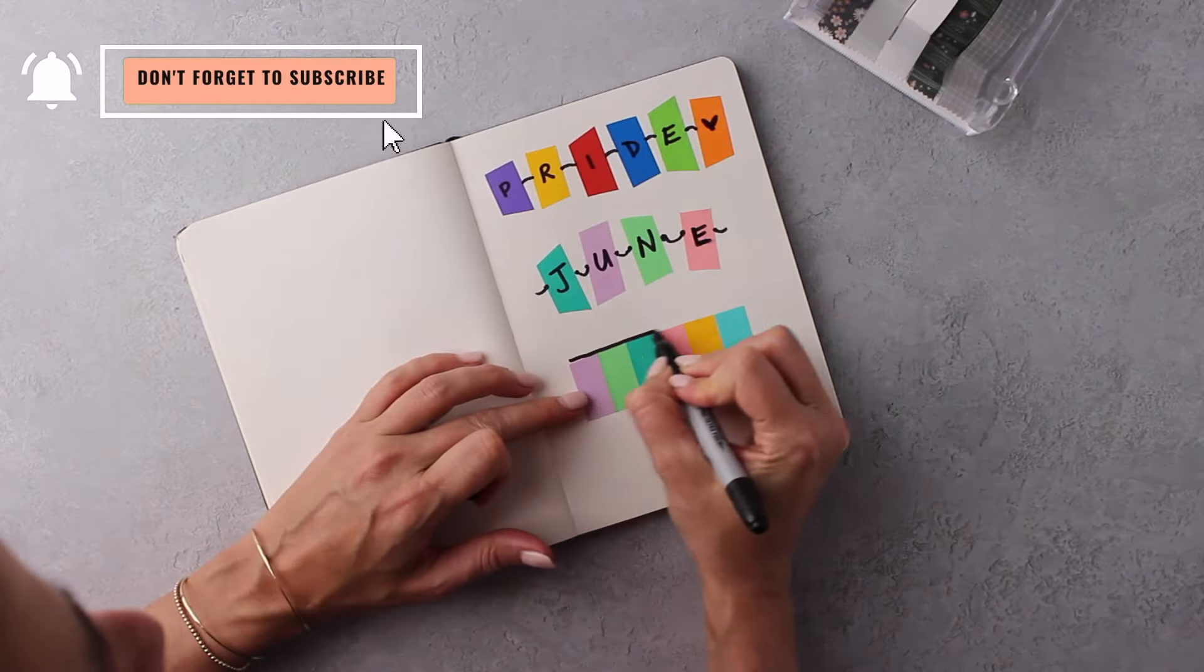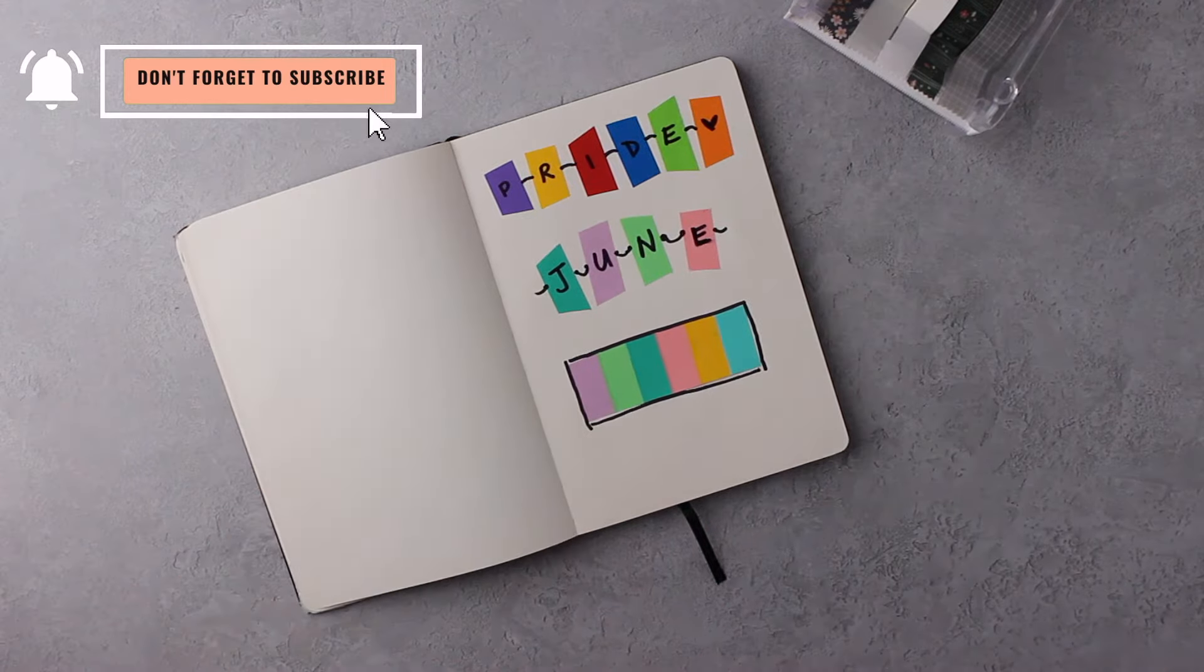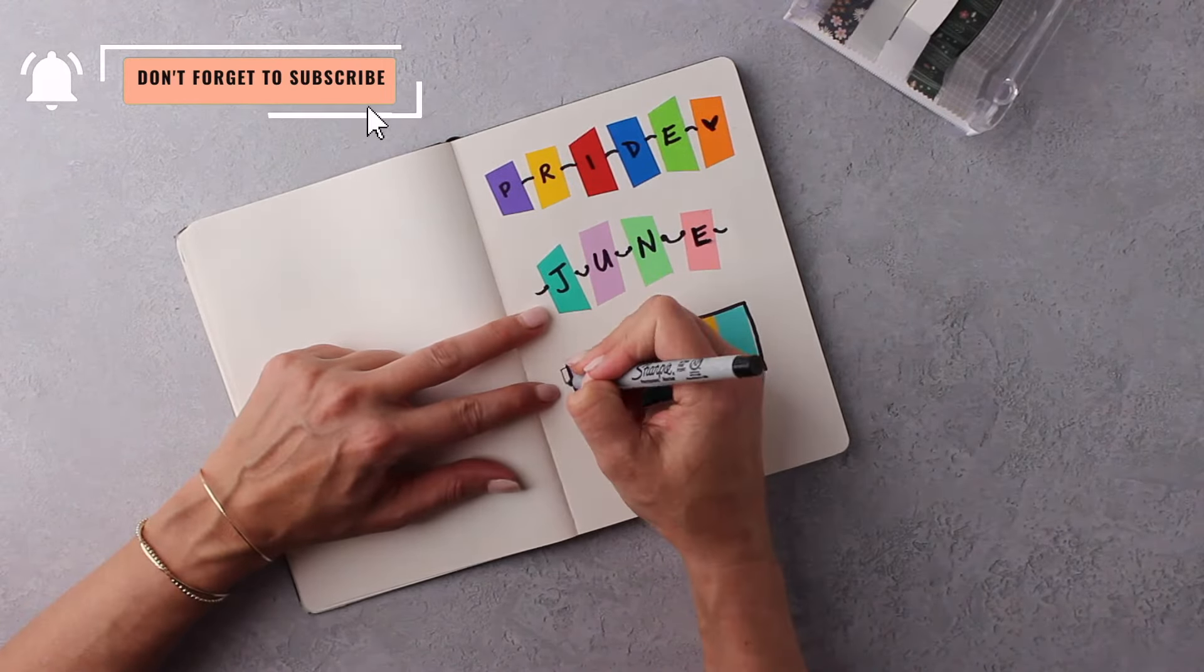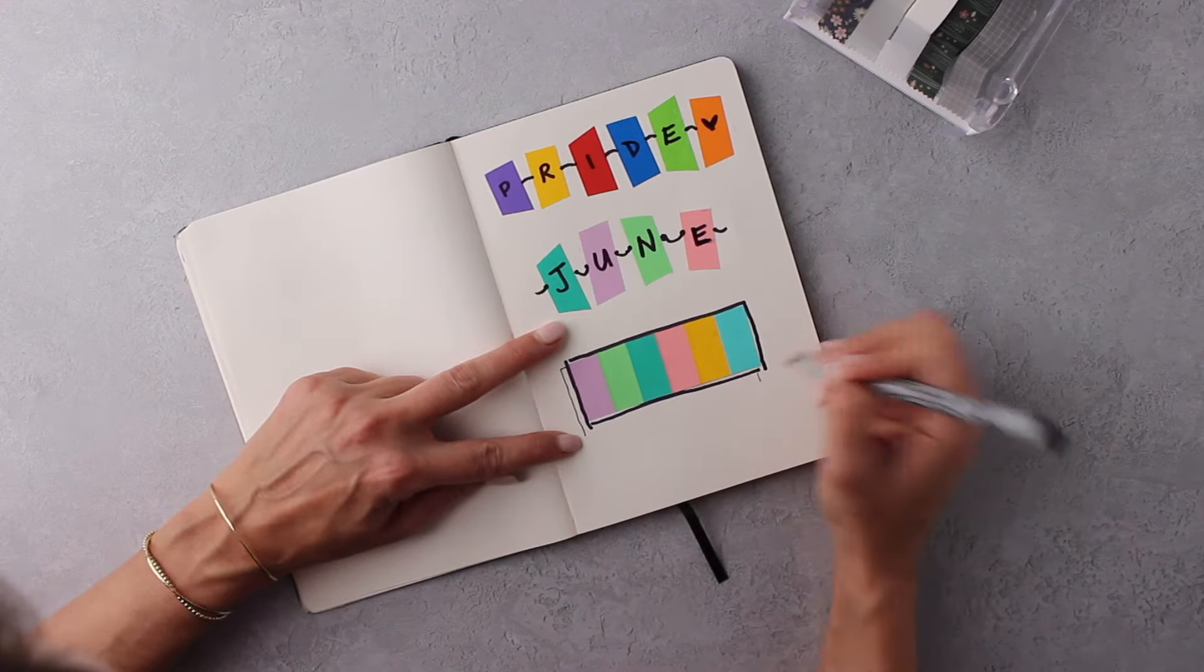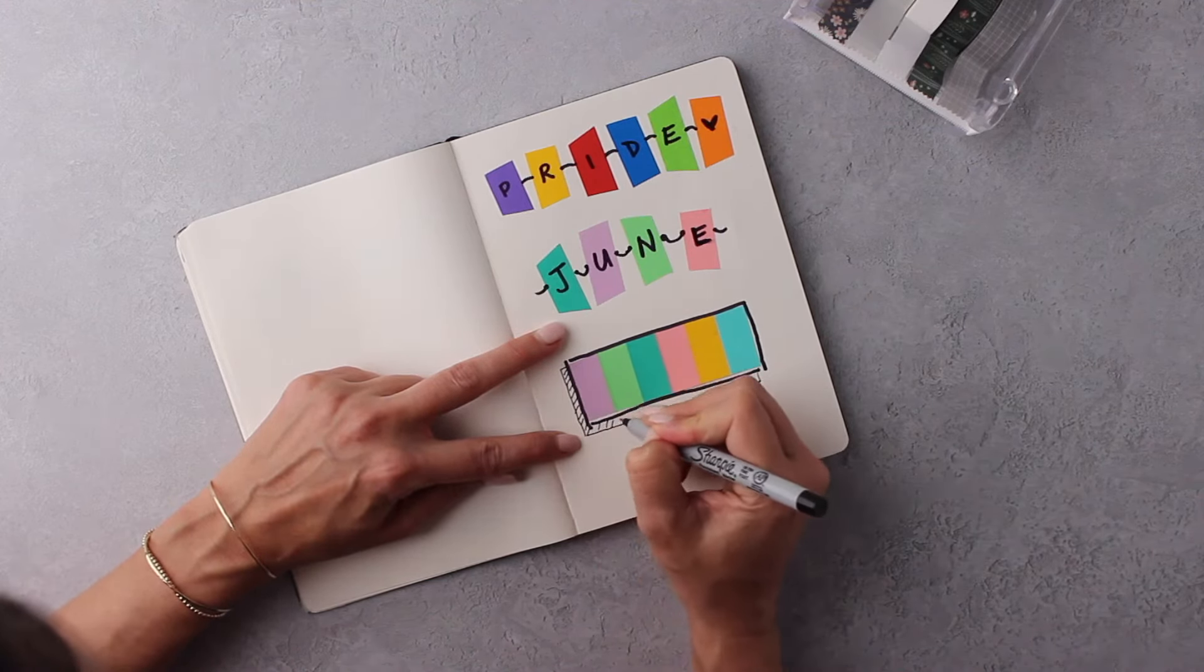I'm going to pick up my thick Sharpie and just draw a rectangle around this rainbow theme, and then I'm gonna grab my thin one and do my little 3D effect because I love when a banner looks like it is literally popping off the page at you.